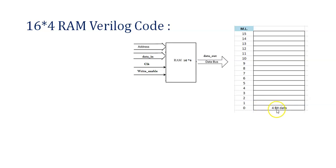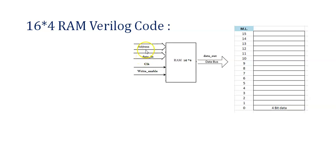Inside each location we will be able to store 4-bit data, so data_in will be 4-bit, for example 0010. The output data_out is also 4-bit. For operation we will be considering clock and there is a write_enable pin, which is a single bit indicating whether we will be writing or reading data. If write_enable is 1, whatever data is on data_in will be stored at the selected address. If write_enable is 0, it will be reading the data.